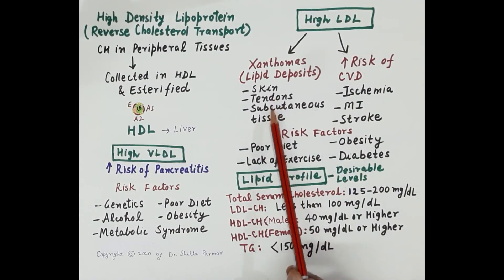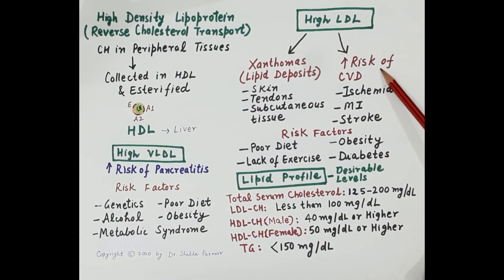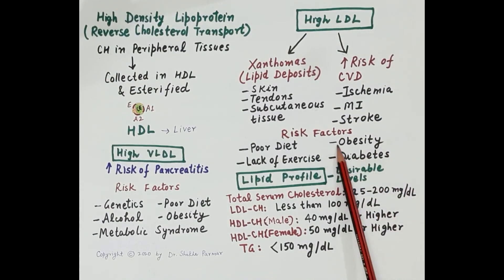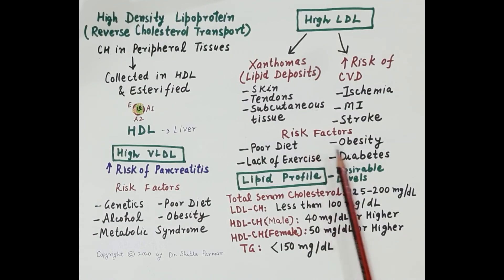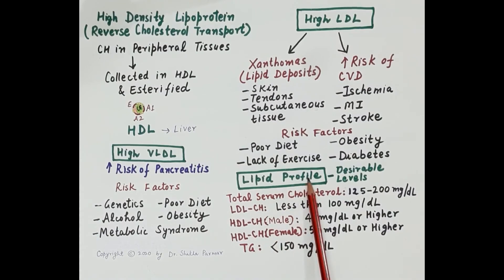High LDL leads to development of lipid deposits in body tissues like skin, tendons, and subcutaneous tissues — called xanthomas. High levels of lipids are one of the most important risk factors for ischemia, myocardial infarction, and stroke. Risk factors associated with high LDL include a diet rich in saturated and trans fats, obesity, lack of exercise, and diseases like diabetes.